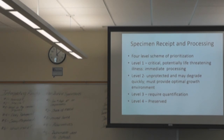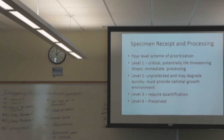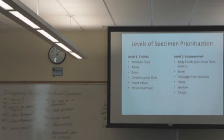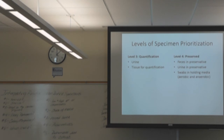Specimen receipt and processing — this is definitely on the test. There's a four-level scheme of prioritization. Level one is critical: amniotic fluid, blood, CSF, heart valves. Level two is unpreserved and processed quickly: body fluids, bone, wound drainage, feces. Level three requires quantification: urine or catheter tip. Level four is preserved: feces in preservatives, urine in preservatives, or swabs not in holding media.